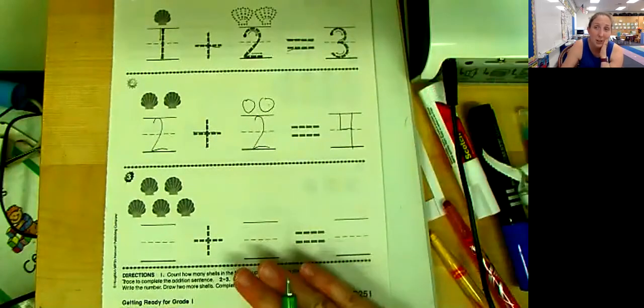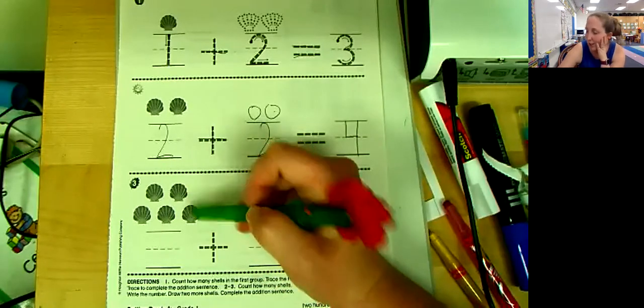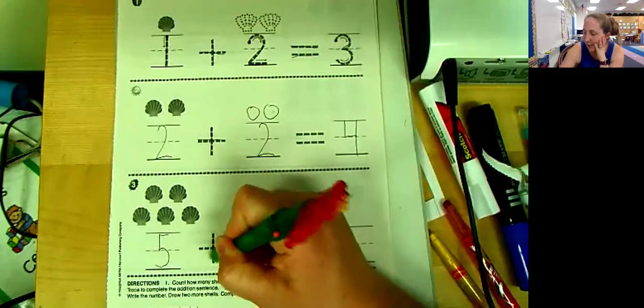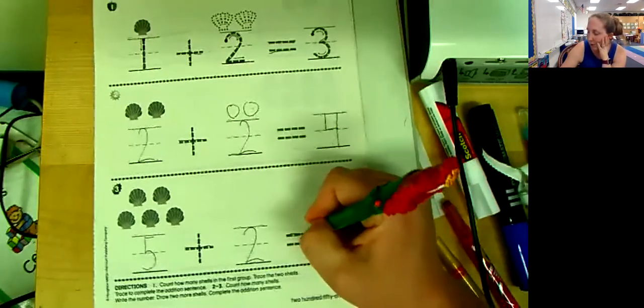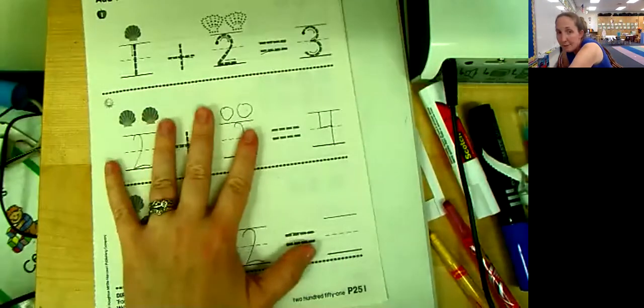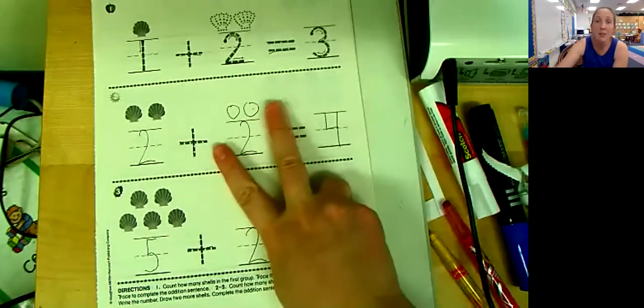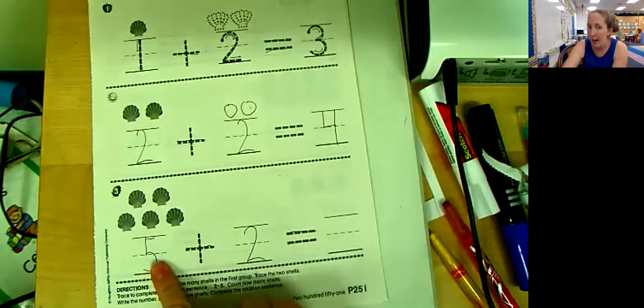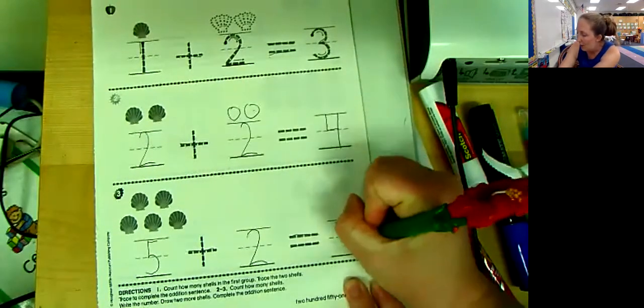Last one I'm going to help you with, and then you guys are going to do the backside all by yourself. We have one, two, three, four, five shells here. Plus two more, because we're always doing plus two today. Equals, hmm, well I could do this one on my fingers, how about that? I already have five and I'm going to add two more. So instead of counting my five fingers and then going two more, I'm just going to say the number five and count two more with my fingers. Okay. Five, six, seven. Five plus two is seven.